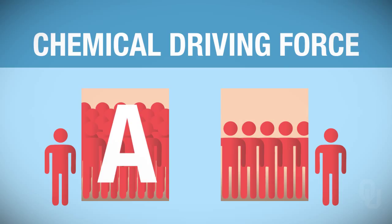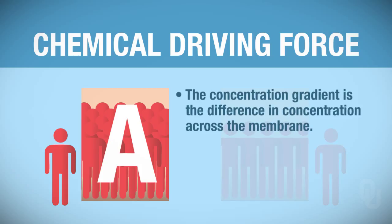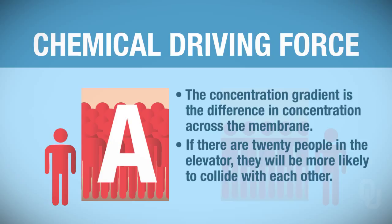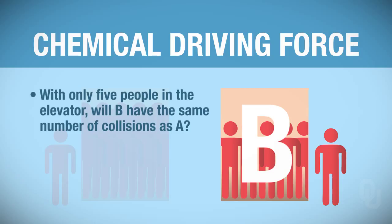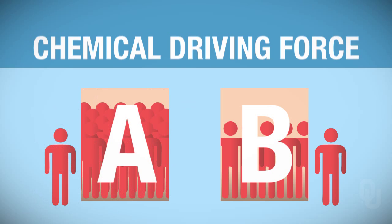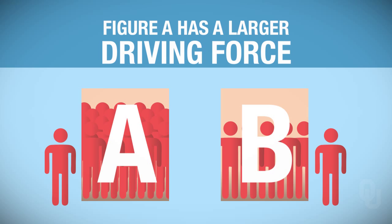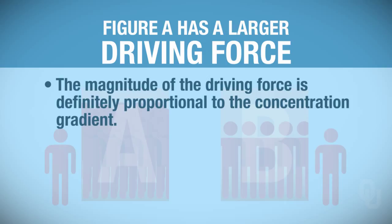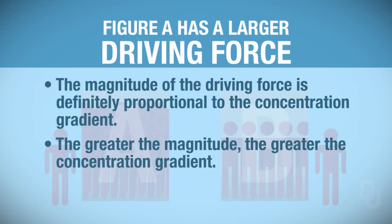Elevator A has the higher concentration gradient, because a concentration gradient is the difference in concentration across the membrane. With twenty people crammed inside Elevator A, they generate a lot of energy through many collisions. Elevator B has only five people inside, so there are fewer collisions, less energy, and not as strong a gradient. Therefore, Elevator A has a larger driving force. The magnitude of the driving force is definitely proportional to the concentration gradient—the greater the concentration difference, the greater the driving force.